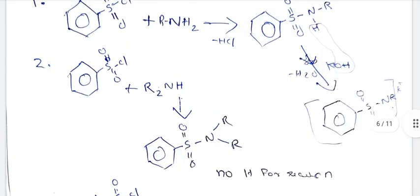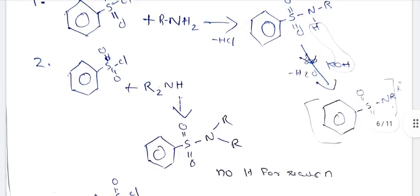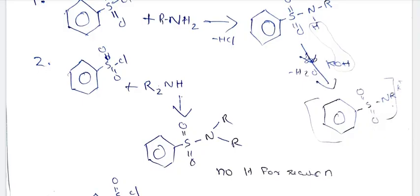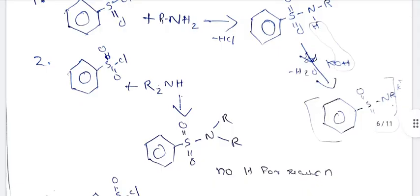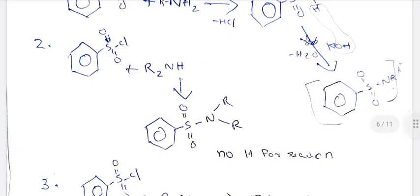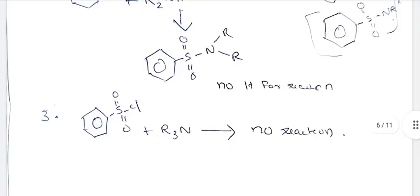If you use a secondary amine, which is R₂NH with two alkyl groups, treating it with benzene sulfonyl chloride replaces the hydrogen to form N,N-dialkyl benzene sulfonamide. But further reaction stops here because there is no N-H remaining. Tertiary amines do not react at all. This is the Hinsberg reaction — separating primary, secondary, and tertiary amines.